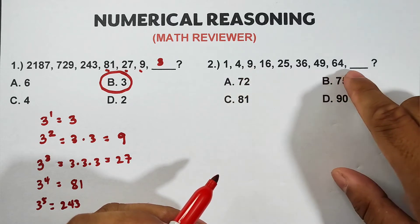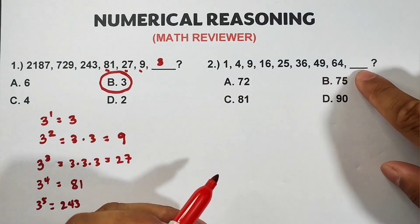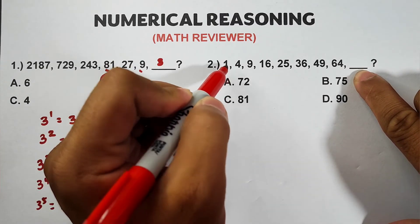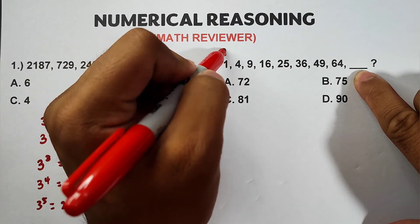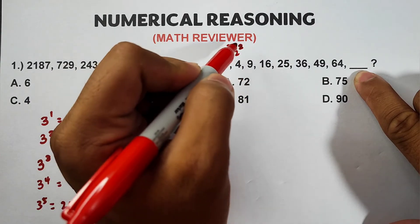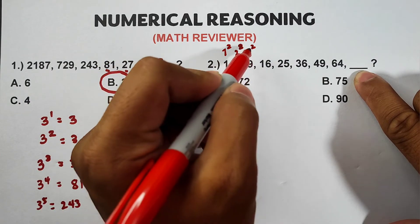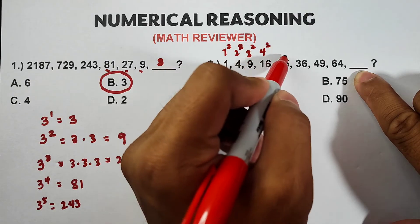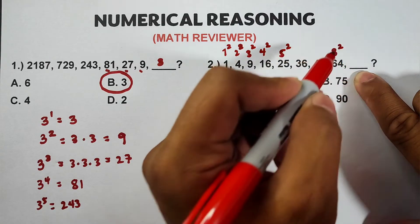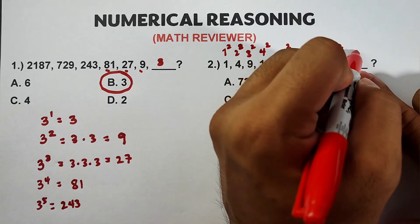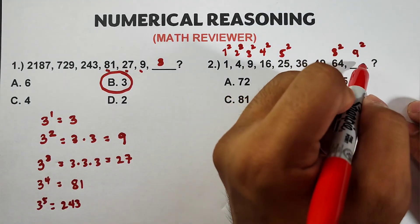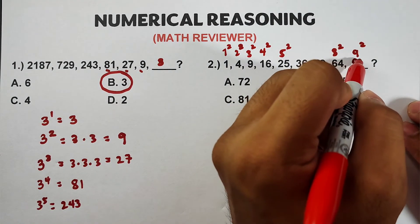Up to 64, that means the missing number should also be a perfect square. This 1 is 1 squared, this is 2 squared, this is 3 squared, this is 4 squared, this is 5 squared, up to here this is 8 squared. Meaning the missing one is 9 squared which is equal to 81.